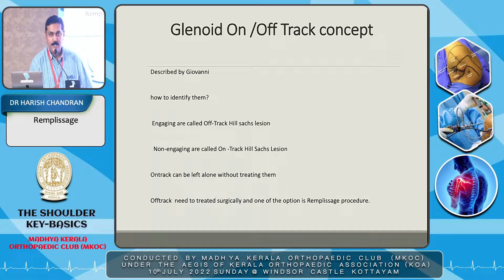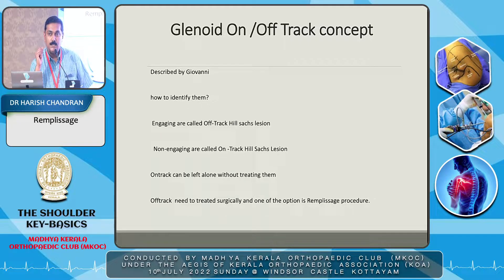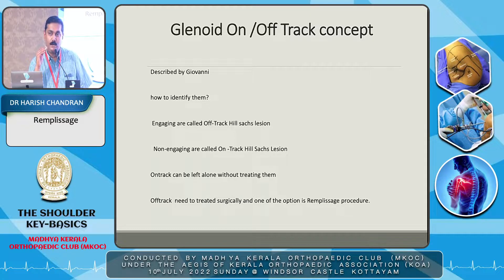The glenoid on-track and off-track concept was described by Giovanni. To identify them, you need to know what a glenoid track is. A glenoid track is when the posterolateral part of the humeral head during the motion of abduction and external rotation maps its track with the glenoid — that's supposed to be about 83% of the anterior-posterior diameter width of the glenoid.